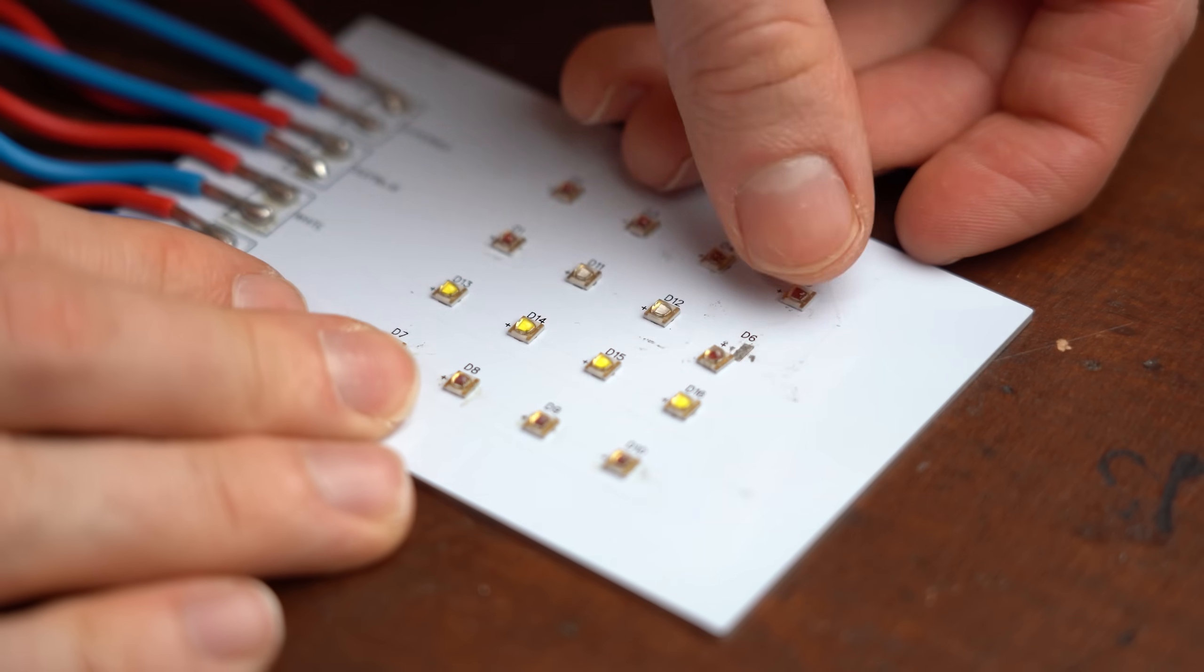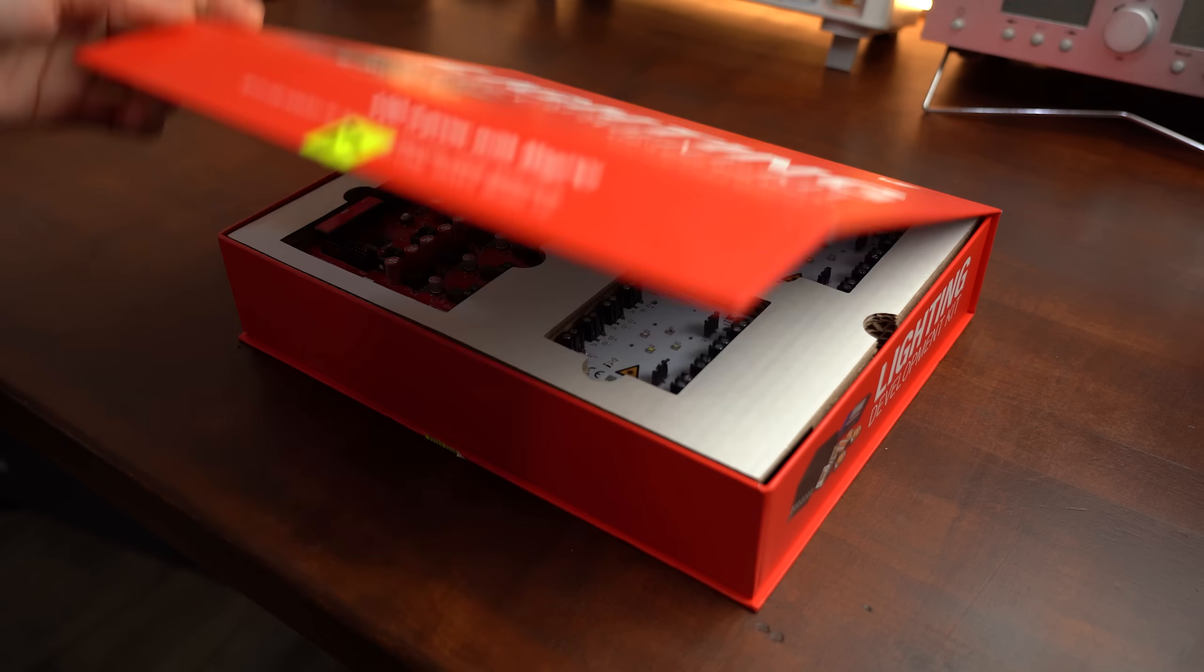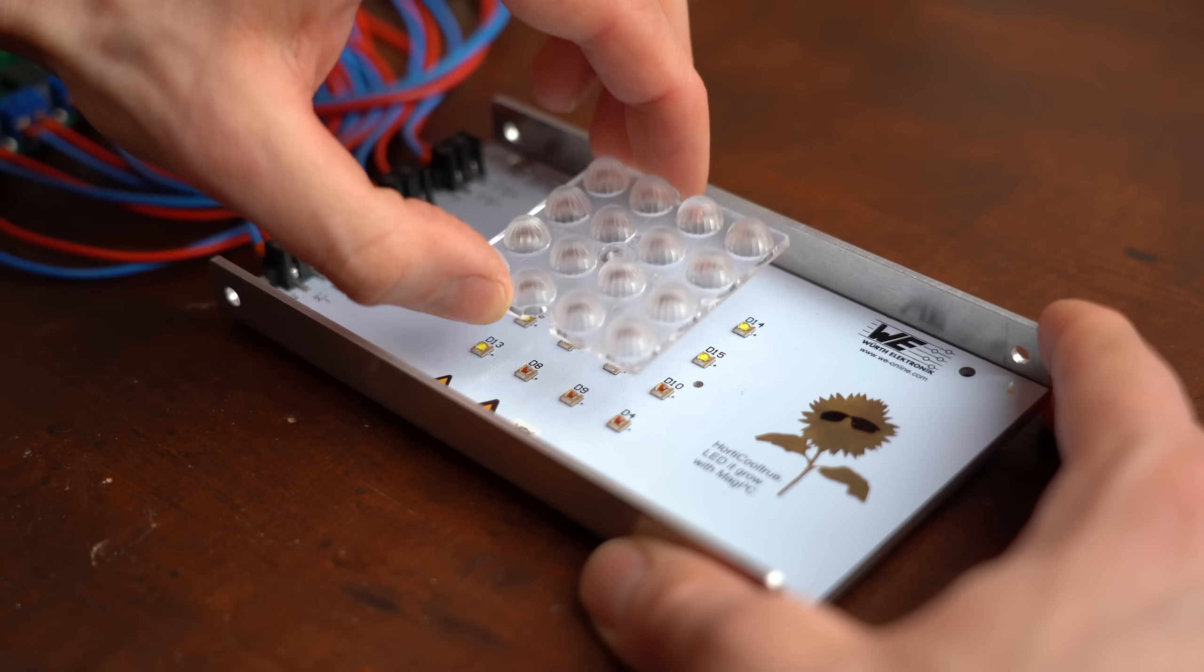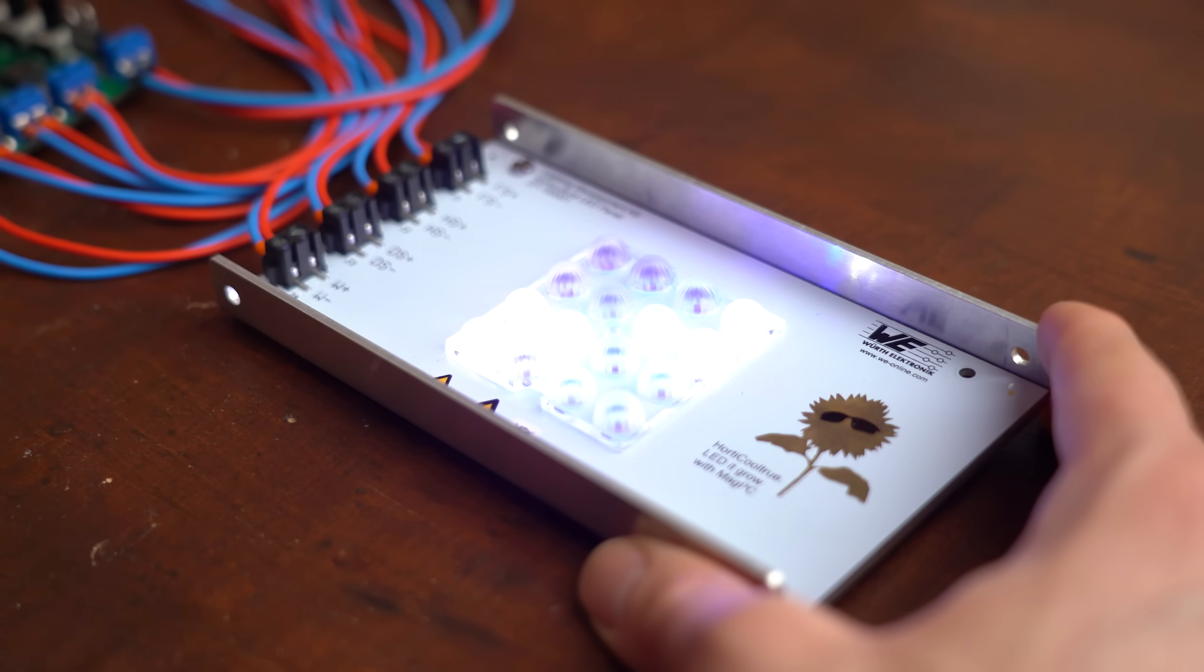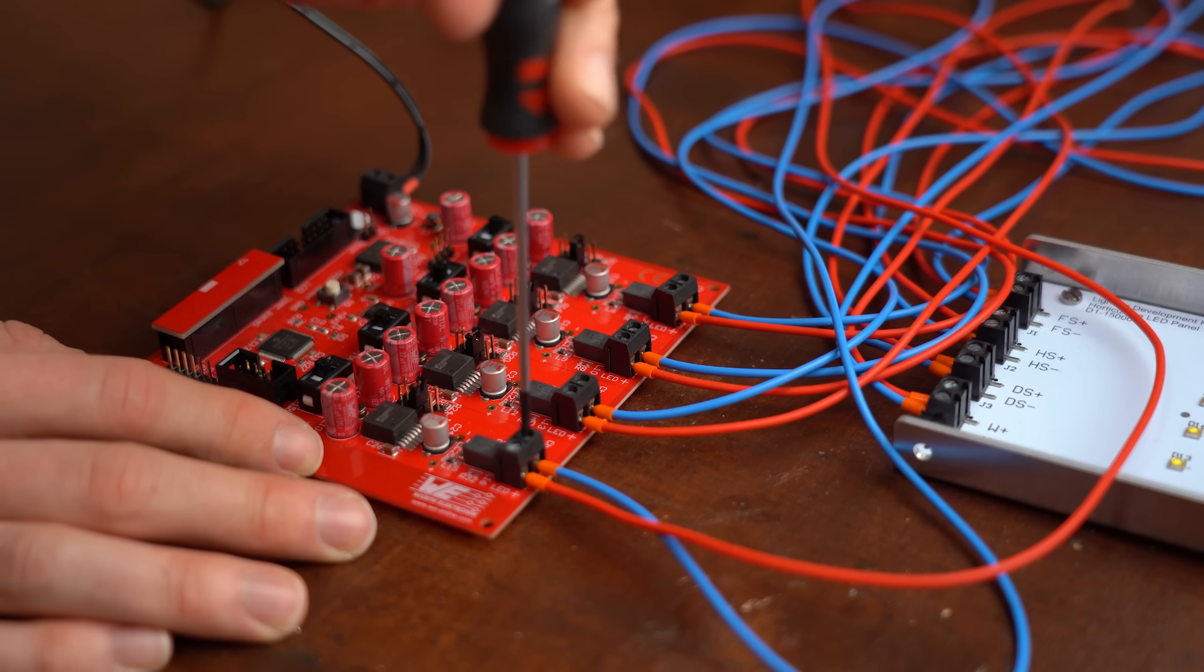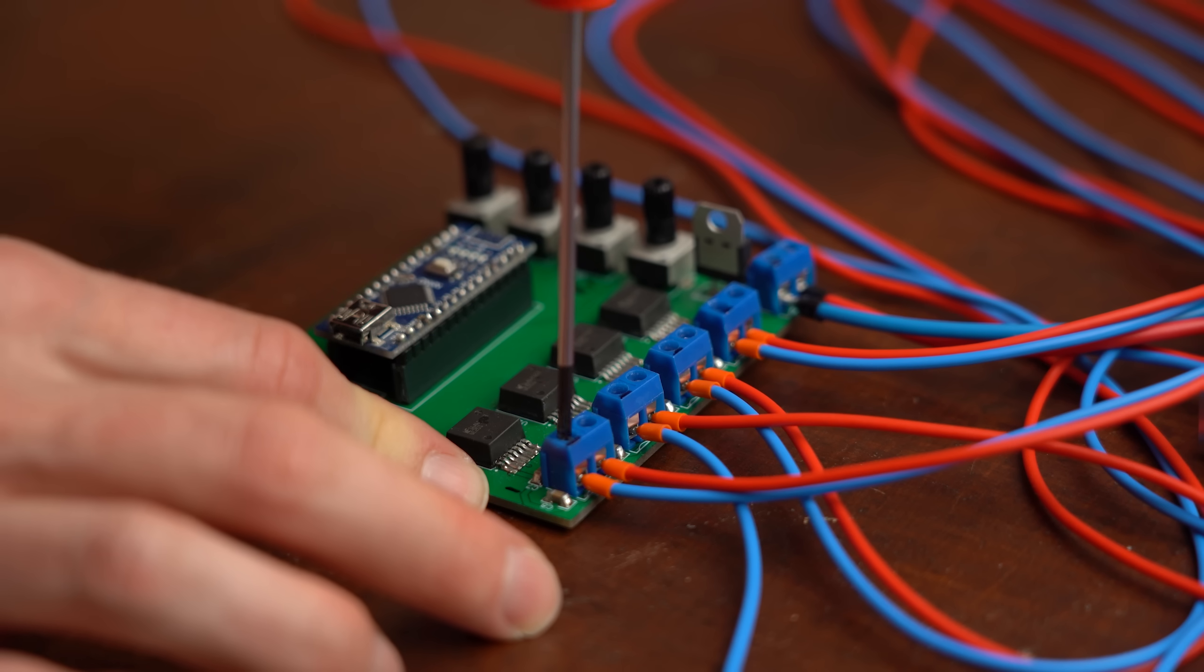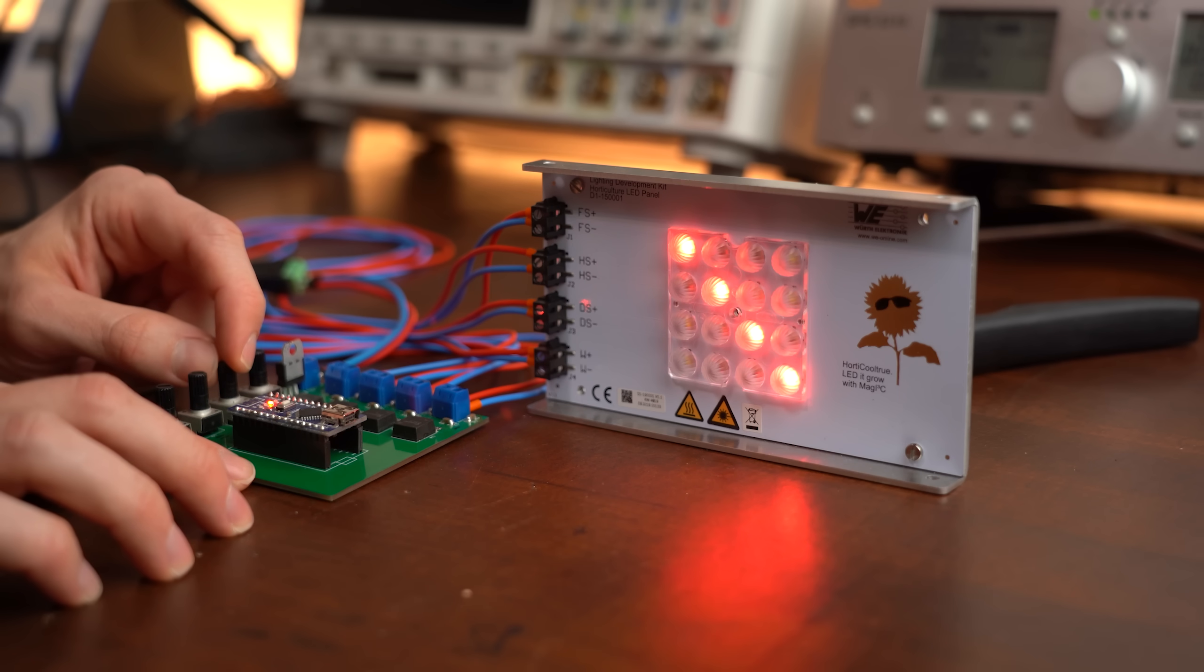But luckily while I was about to fix this problem the lighting development kit from before was back in stock and needless to say it comes with a Horticulture LED panel that I can use and best of all it even comes with a lens that focuses the light better. Now the kit also comes with its own LED driver PCB which seems to be more sophisticated than mine and even supports Bluetooth but I decided against using it because mine works just fine.